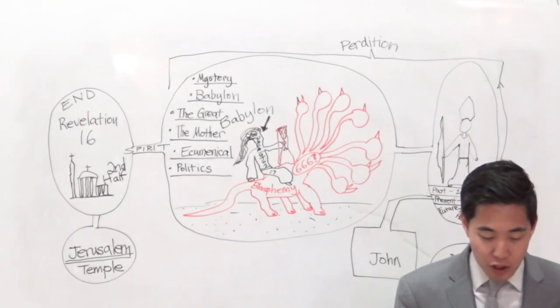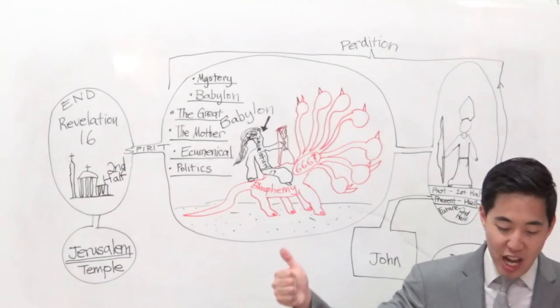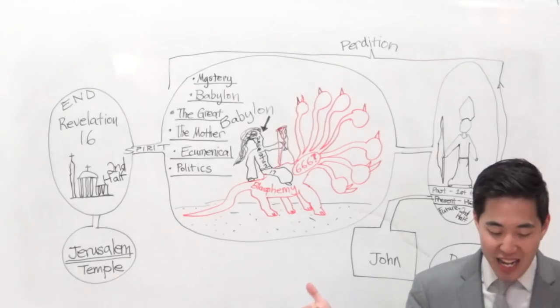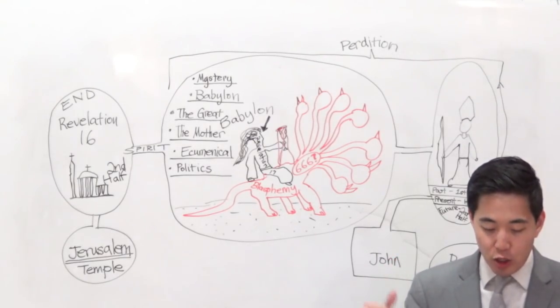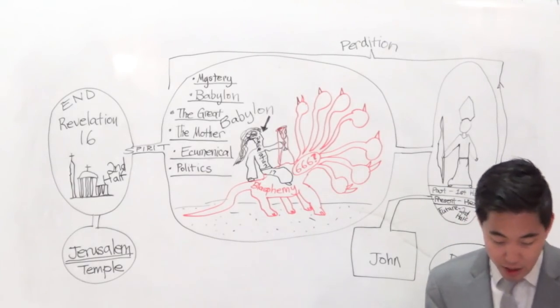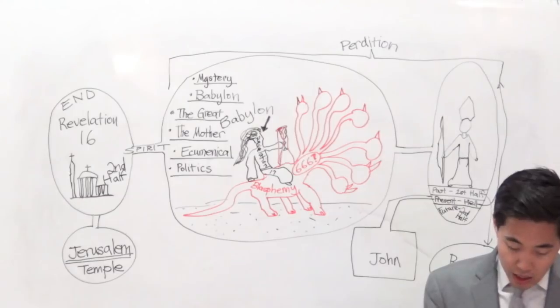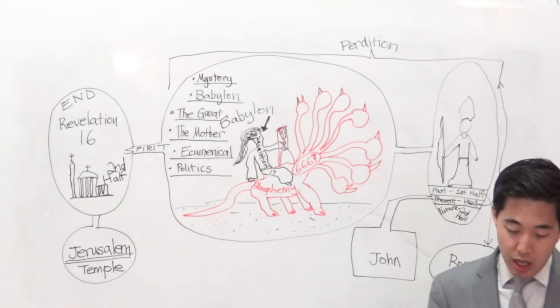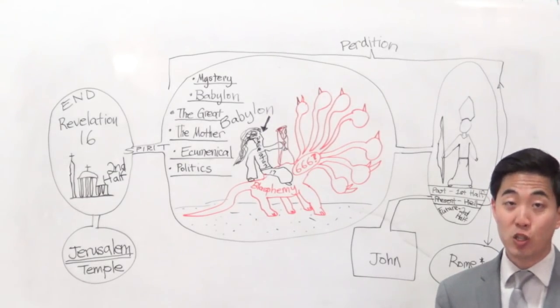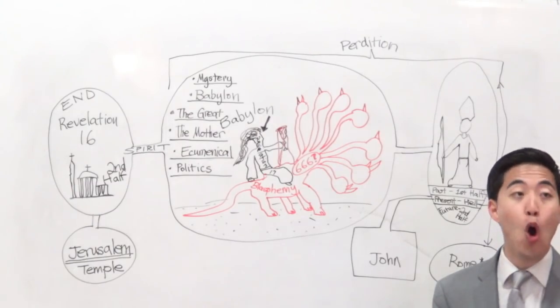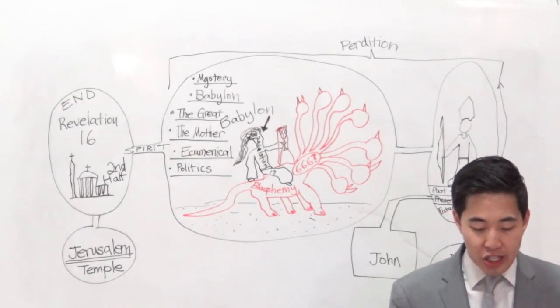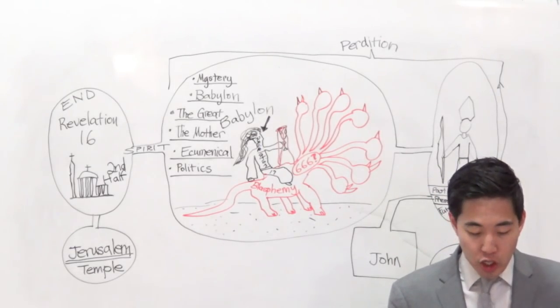Let's return to our main text, verse 8. So these are lost people whose names are not in the book of life when they behold the beast that was and is not and yet is. So they look at this Antichrist who, again, past, present, and future. That's referring to the Antichrist. Let's look at verse 9. And here's the mind which hath wisdom. So if your mind has wisdom, if you're going to be smart, then you're going to know this.